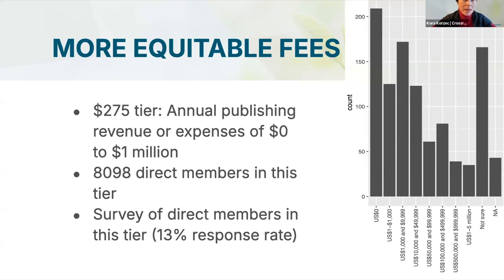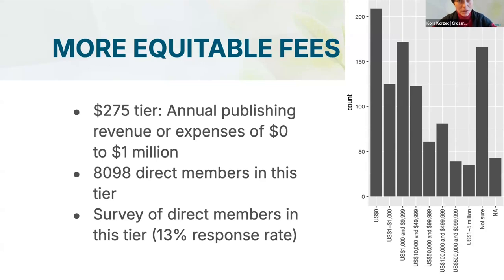Our main interest is in our currently lowest tier for publishing members, which is $275 US dollars per year as a membership fee. This tier currently applies to all organizations that join Crossref with annual publishing revenue or expenses between zero and one million dollars. It's easy to notice there is a great level of diversity between organizations with no revenue and those with one million US dollars in revenue — so we started exploring how we might make changes here.